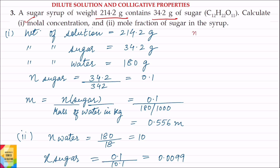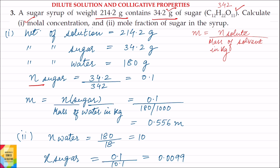The formula for molality of the solution is moles of solute divided by mass of solvent in kg. To find moles of solute, we need the weight of solute and the molecular weight of solute. The molecular weight of sugar is 342 grams per mol and the weight of solute is 34.2 grams. So moles of sugar = 34.2 divided by 342, which equals 0.1 moles.